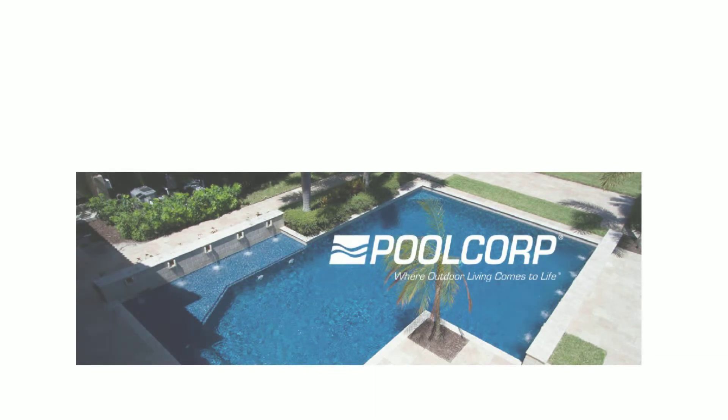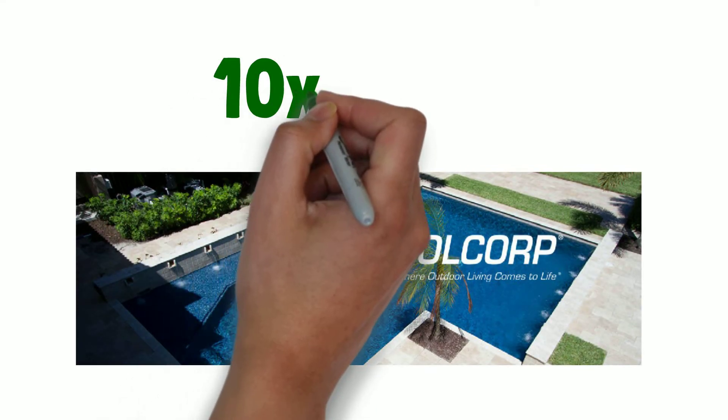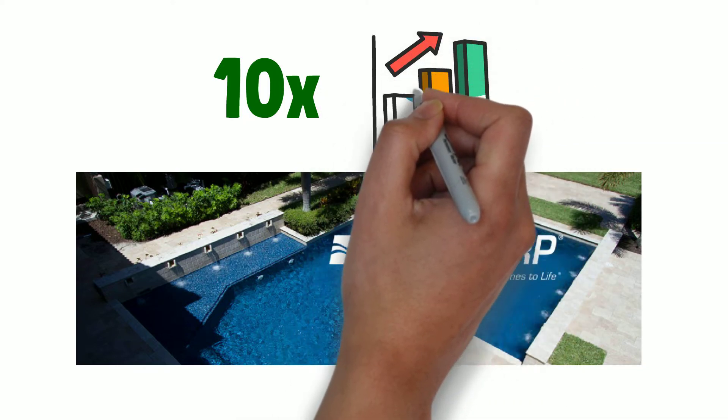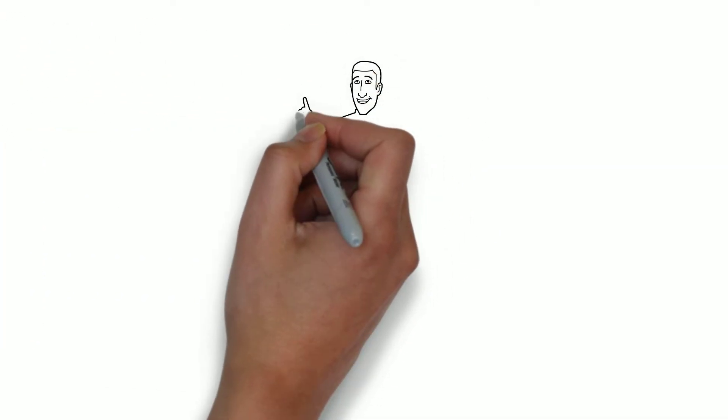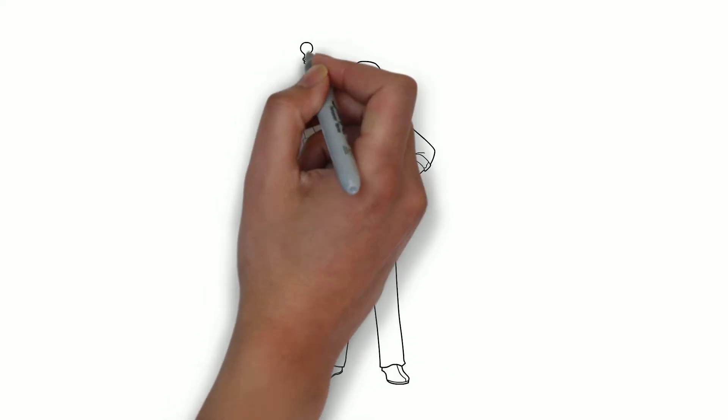Pool Corporation, for example, which is a distributor of swimming pool supplies, had a 10 times return in the last 10 years. It was a fantastic investment and a simple and easy business to understand. Understanding a company will help you to keep your investment during a recession period, as you will know the company's potential for the long run.